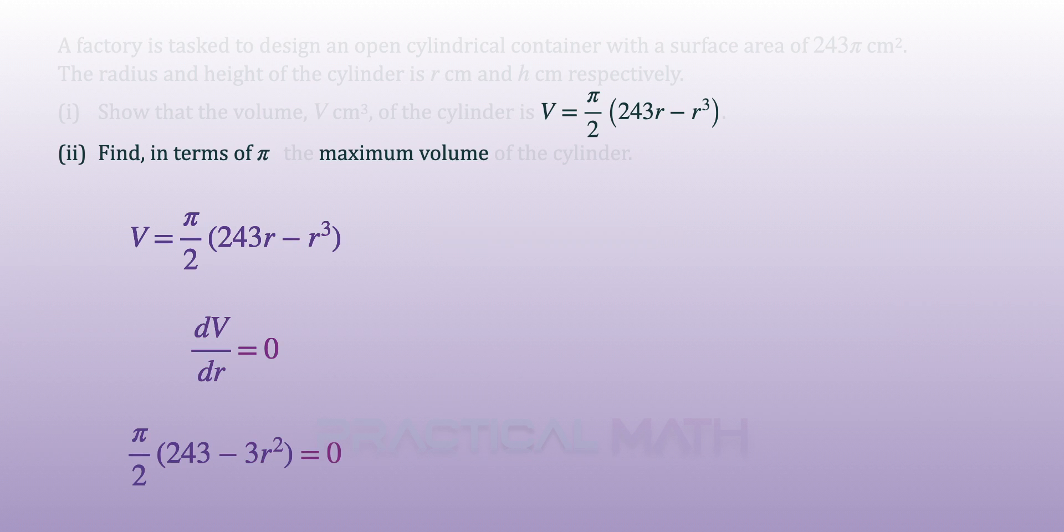We will now equate the first derivative to 0. Solving for r from this step gives a result of 9. By replacing r with 9 into the V equation, we will get a volume of 729π cm³.